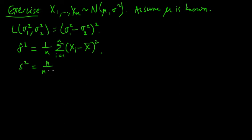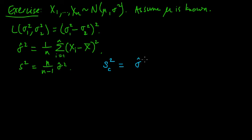We could write s² as n times the biased estimator divided by n minus 1. More generally, this suggests we could define s_c² to be sigma-hat squared times c, for some positive real constant c.